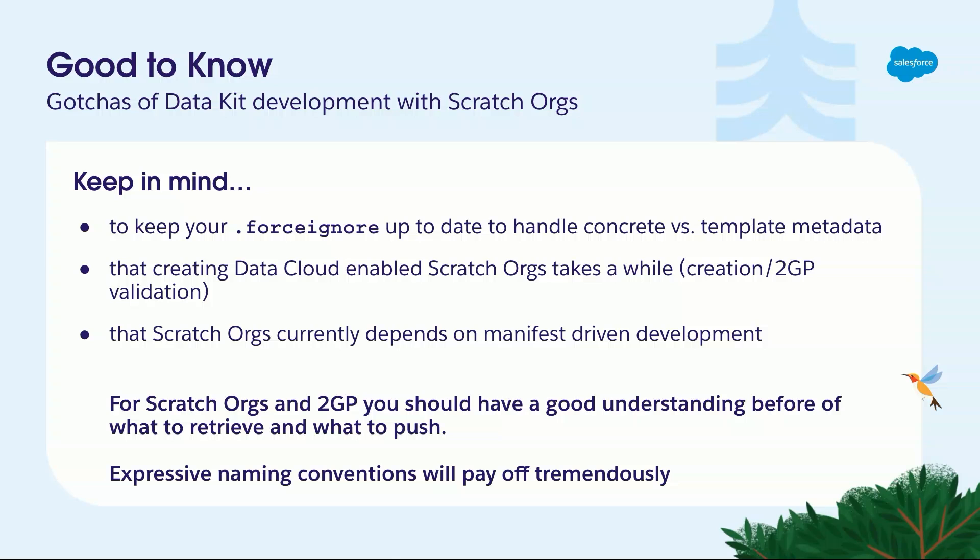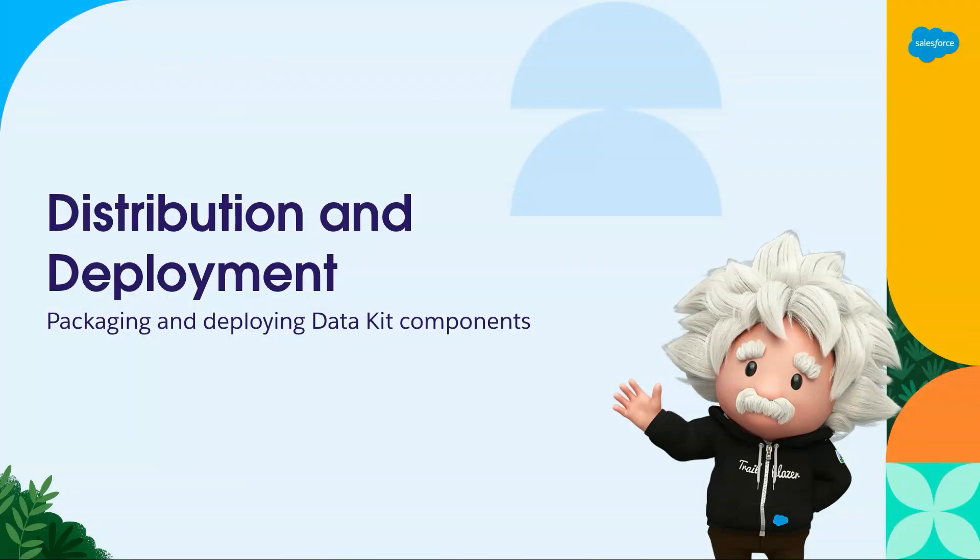What we need to build a package with data cloud assets is a manifest-driven development, and that is the biggest change compared to standard source-driven development. We rely on source tracking mostly, but for packaging with data cloud you should know what you want to use and put it in the package XML as a manifest. Otherwise you will end up with packages that are very, very hard to control.